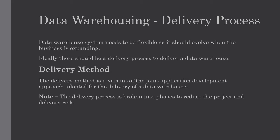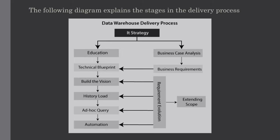We have staged the data warehouse delivery process to minimize risk. This approach will not reduce the overall delivery timescales, but it will ensure that business benefits are delivered incrementally throughout the development process. The delivery process is divided into different phases to reduce project and delivery risk. The following stages are involved: education, technical blueprint, building the vision, history load, ad hoc query, and automation.